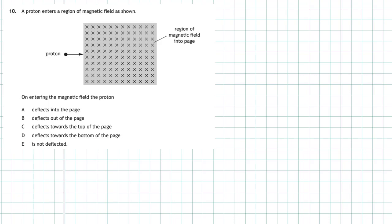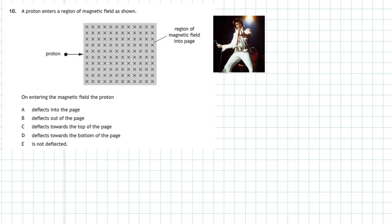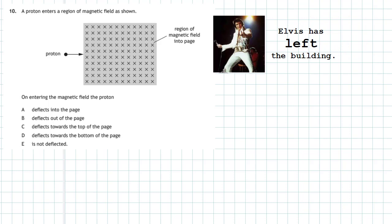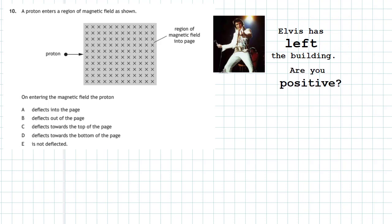So how are we going to decide which direction the proton goes? We'll rely on Elvis — the most famous singer in the world. When Elvis finished his concert, there would be an announcement on the tannoy that 'Elvis has left the building,' and everybody cried out 'Are you positive?' That's how we remember it, because if it's a positive charge going into a magnetic field, we have to use the left hand rule.